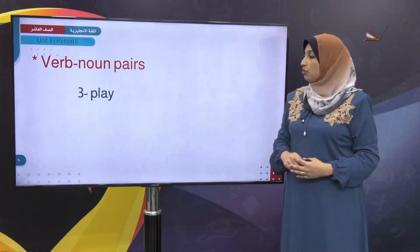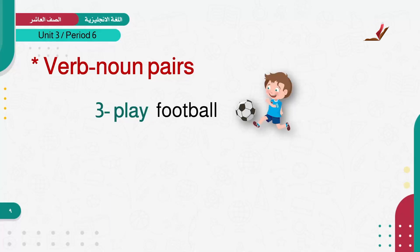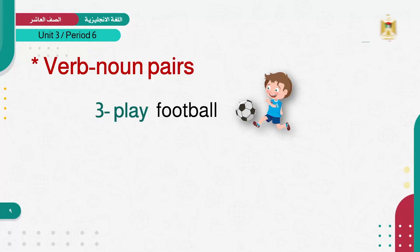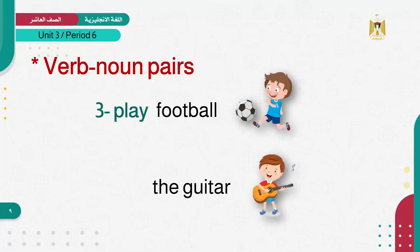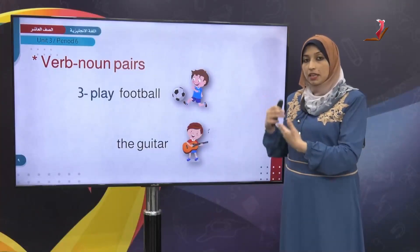Number three: let's move to 'play,' which means to play. What do we play with? We use 'play' when we use our upper or lower limbs. For example, 'play football' — using the lower limbs, the legs. Also 'play the guitar' — using the upper limbs, the hands.